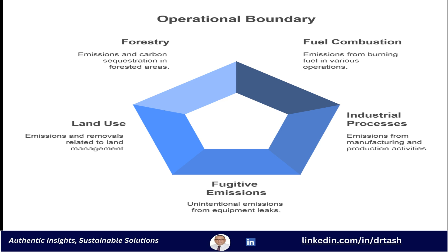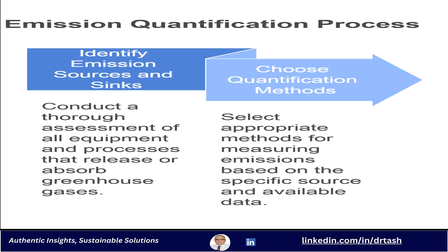So we've drawn our boundaries — figured out the who and the what of their emissions. Now, how do we actually measure those emissions? That's what Section 7 is all about — a framework for calculating those emissions and removals. First, you've got to identify all the relevant sources and sinks within those boundaries: a thorough assessment of everything they do, every piece of equipment, every process, anything releasing or absorbing greenhouse gases. We're talking everything from boilers and furnaces to company vehicles, chemical reactions, leaks, even agriculture and forestry practices. Then you choose the right quantification methods for each one — direct measurement, calculations with emission factors, a bunch of different options, depending on the specific source, accuracy needed, and available data.